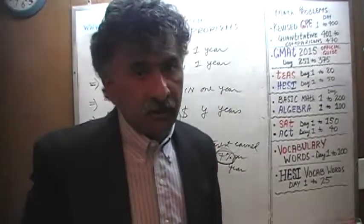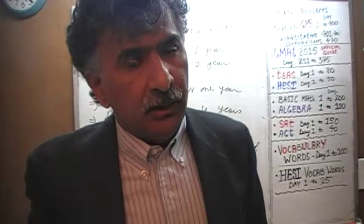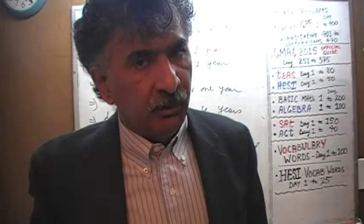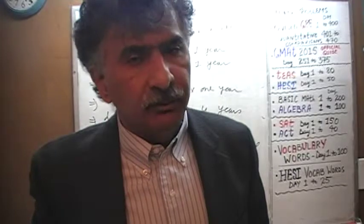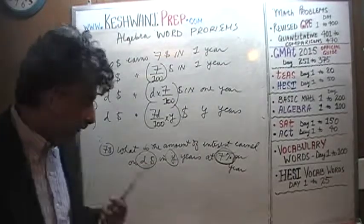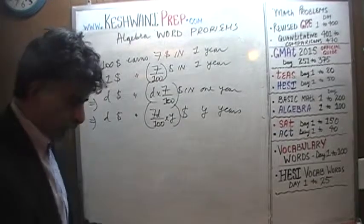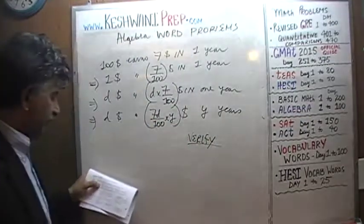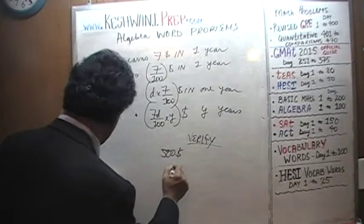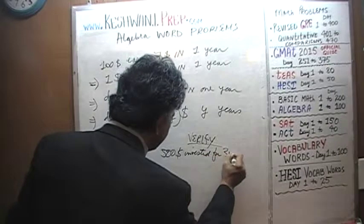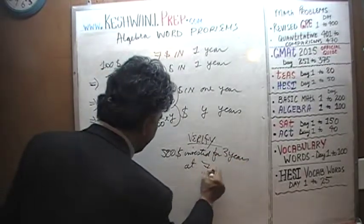Now, if you want, you can actually verify it — it only takes a couple of seconds. It's always a good idea to verify your answer and make sure the arithmetic gives the same result as your formula. Let's plug in numbers to verify: let's invest $500 for 3 years at 7%.